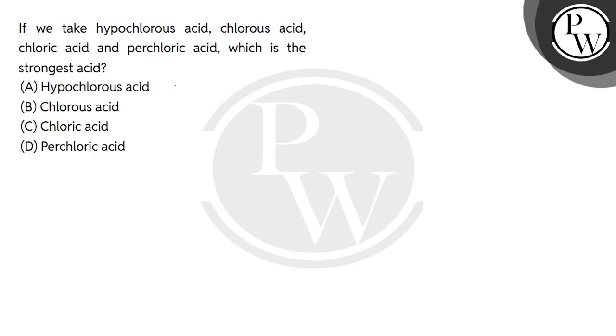Let's see their name and formula. Hypochlorous acid is HClO, chlorous acid is HClO2, chloric acid is HClO3 and perchloric acid is HClO4.